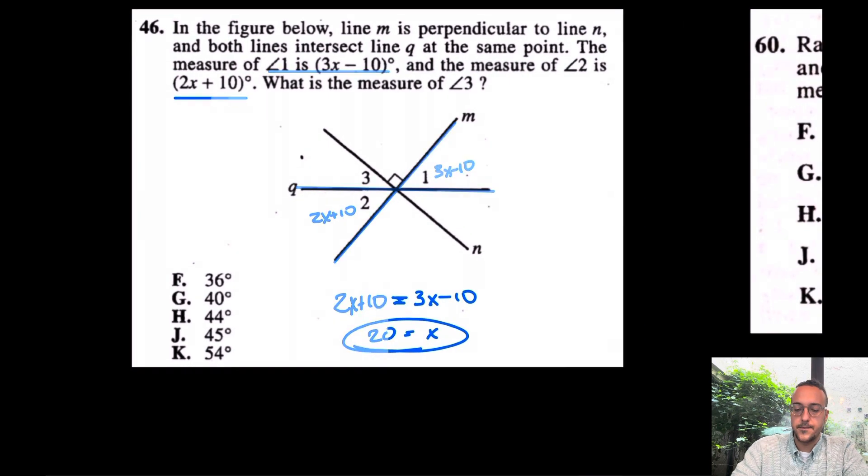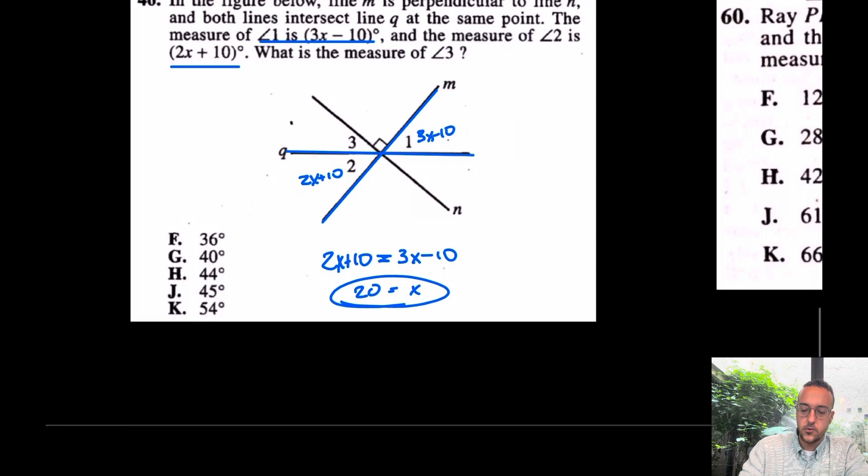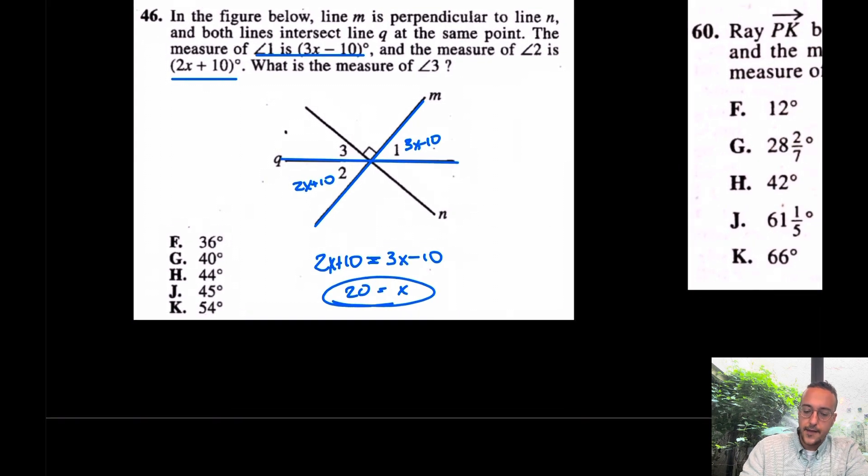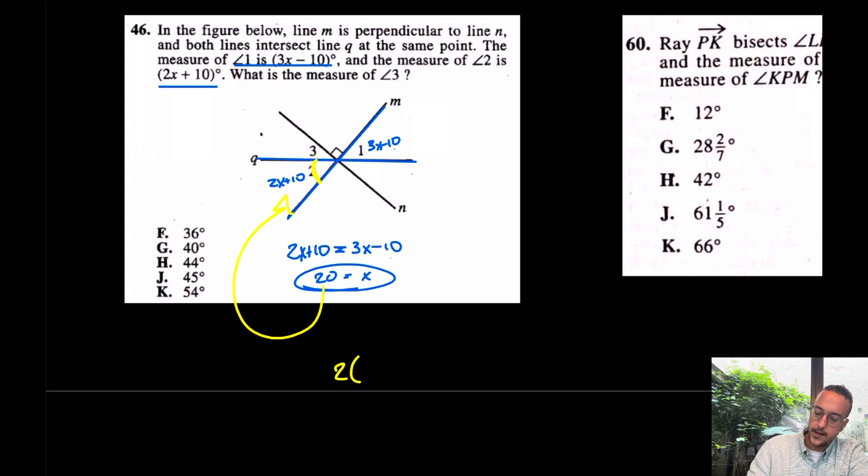And unfortunately, that's not our answer. How would I go about finishing off this question? Well, what I would understand is, at this point, you know what x is. And of course, you want this angle here. So plug 20 back in. When you plug 20 back in, you have 2 times 20 plus 10. That's, of course, going to give you 50 degrees. In other words, this angle here was 50 degrees all along. And if that angle is 50 degrees, what do you think this one right here is? That's going to be 40. It has to be. And again, why? Well, if this is a 90 degree angle, 90 minus this 50 would leave you just with 40. My friends, the answer is G.